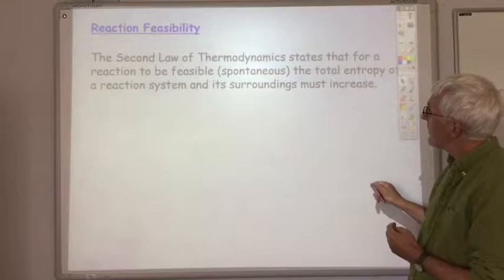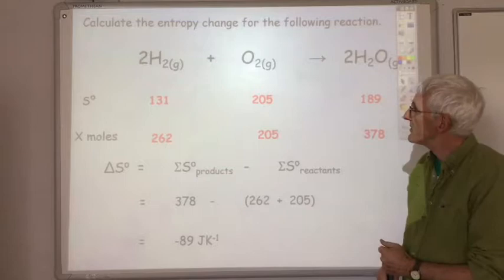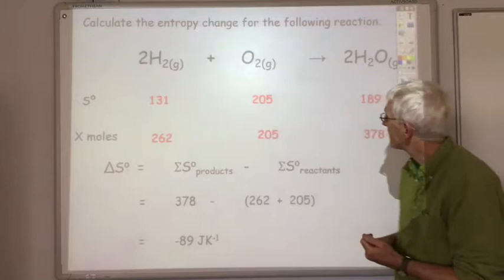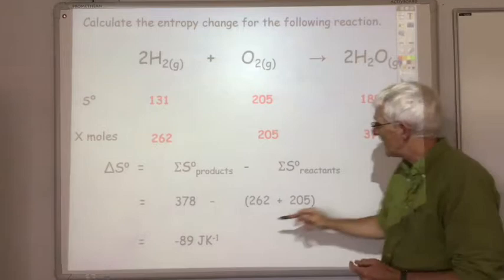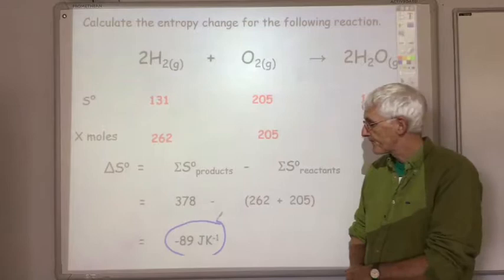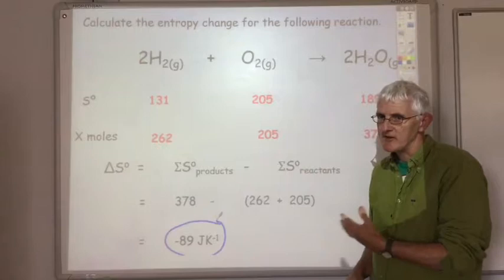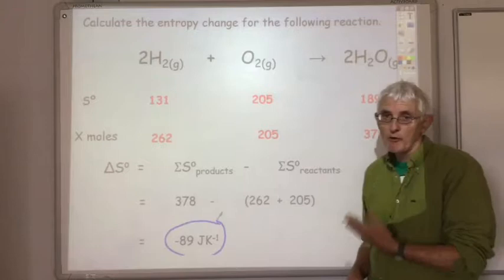I want to take a look at a calculation we did in the previous lecture, calculating the entropy change for the reaction between hydrogen and oxygen gas. We calculated that the entropy change was minus 89 joules per kelvin — a decrease in entropy — which means this reaction is not feasible. But we know this reaction is feasible; you've carried it out loads of times to test for hydrogen gas.